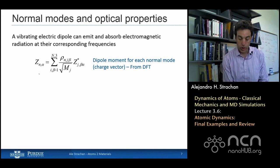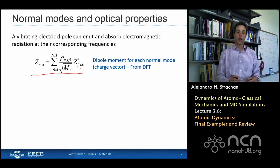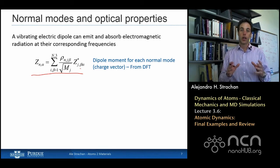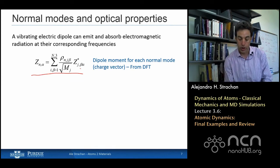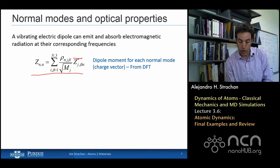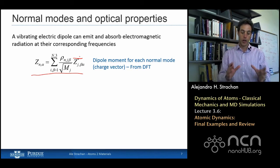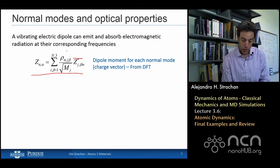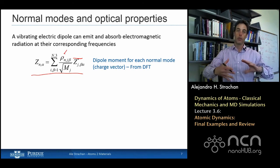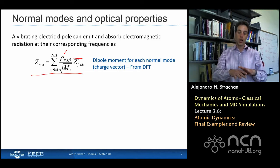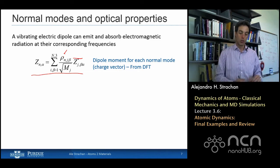And this equation at the top shows how to do that, it's essentially projecting the local charge on the atom, it's actually a charge tensor called the Born effective charge, projecting that over the normal modes, so rho here are the displacements of the normal mode, and this will give me the dipole moment associated with the mode.